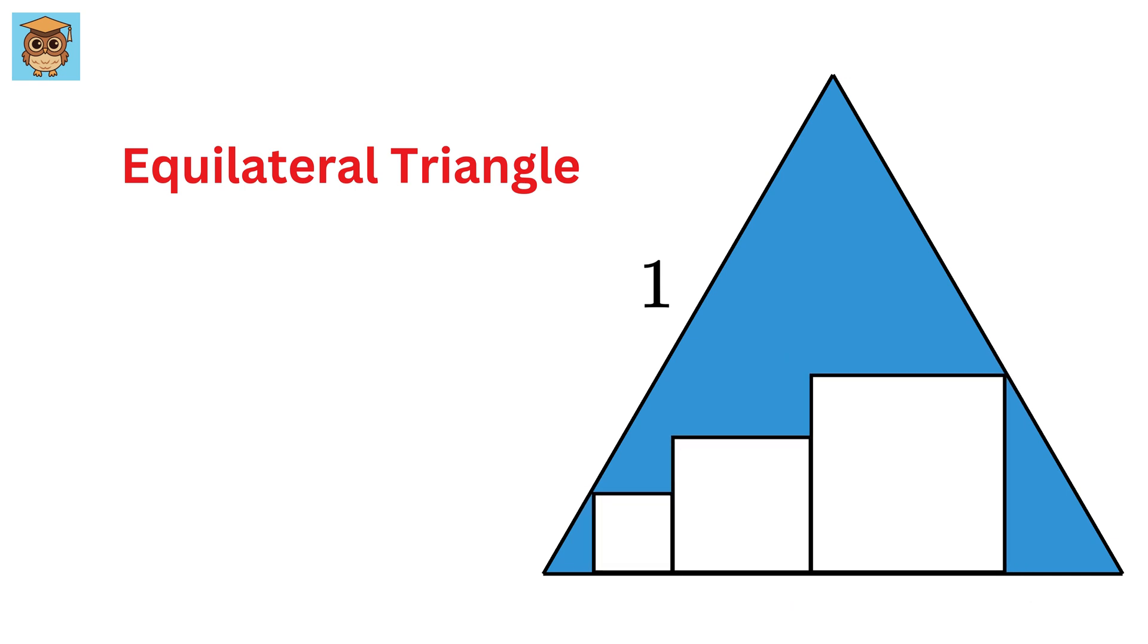We have an equilateral triangle whose side length is 1, and we have three squares inside this triangle such that this square is of side length a, this is of side length 2a, and this is of side length 3a.